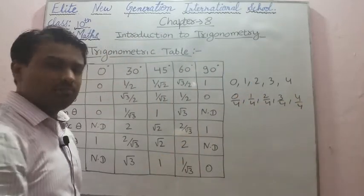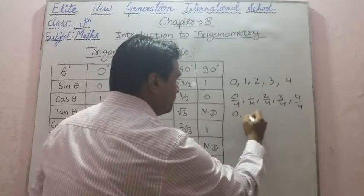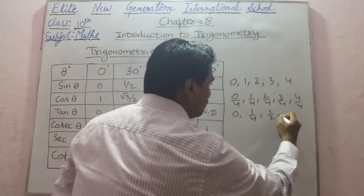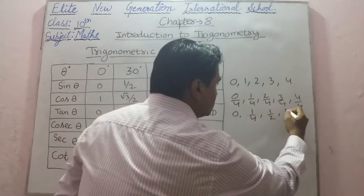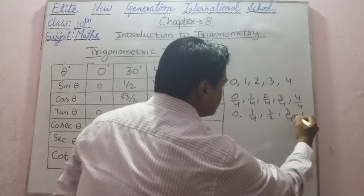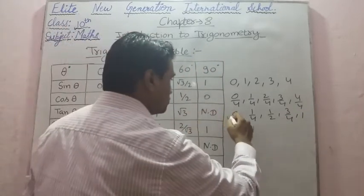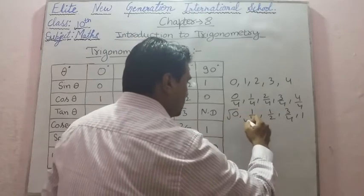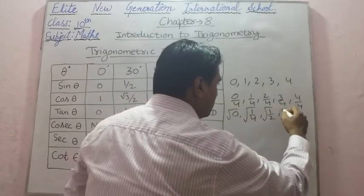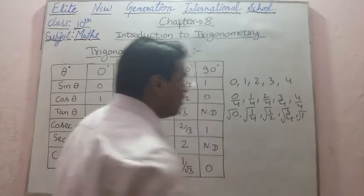When we divide all these numbers by 4, it will be 0, 1 by 4, 1 by 2, 3 by 4, and 1. Now taking the square root of all these numbers: under root 0, under root 1 by 4, under root 1 by 2, under root 3 by 4, and under root 1.